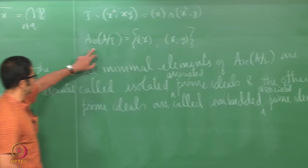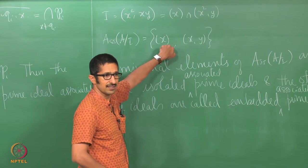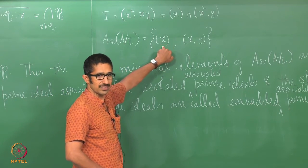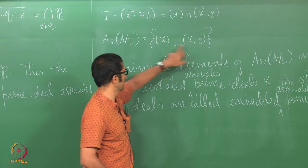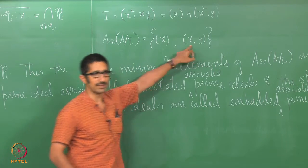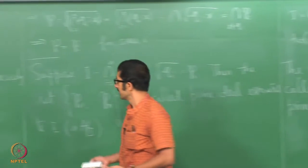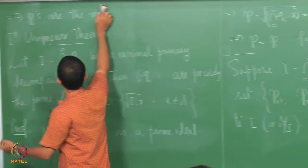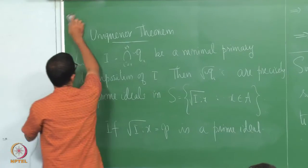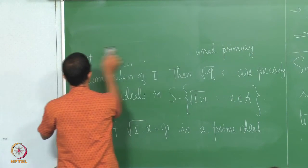In this case, some of the associated primes are isolated primes and some are embedded primes. The terminology isolated and embedded comes from geometry.